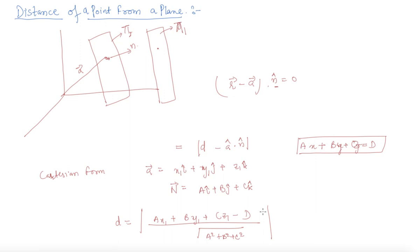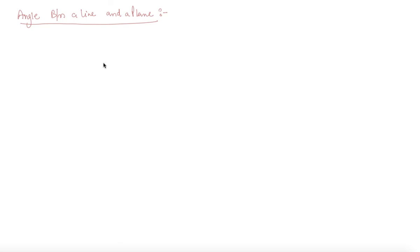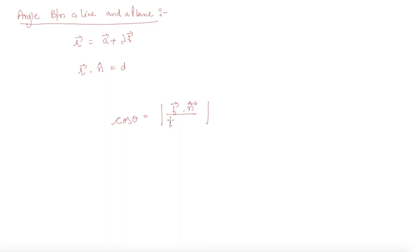Last but not the least: the angle between a line and a plane. Let us say the equation of the line is r = a + λb and the equation of the plane is r·n = d. The angle theta between them is given by sin θ = (b · n) / (|b| |n|).